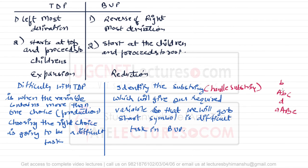Top-down parsers are of two types: number one, top-down parser with backtracking (also called recursive descent parser), and number two, top-down parser without backtracking (also called predictive parser). We'll also see the LL(1) parser, which is a non-recursive predictive parser.